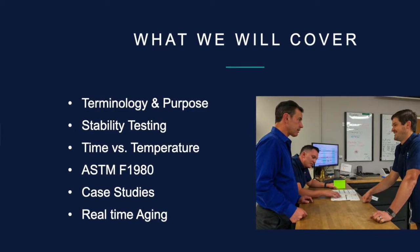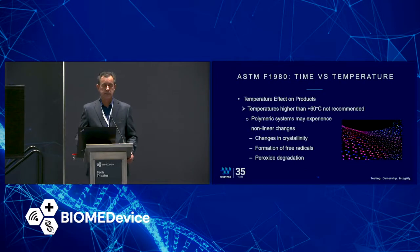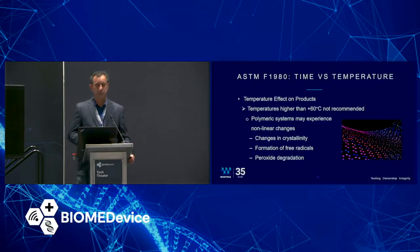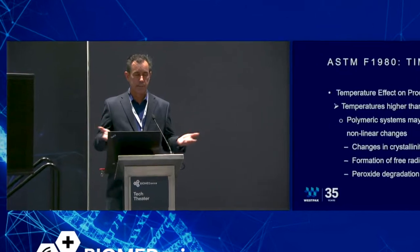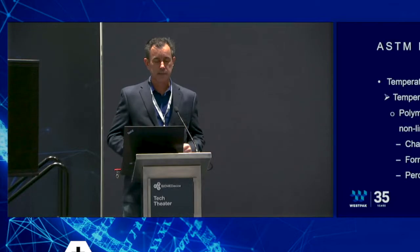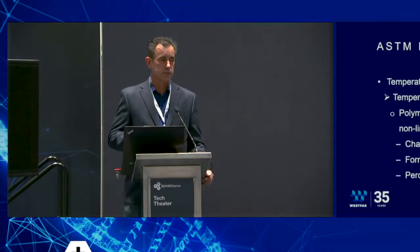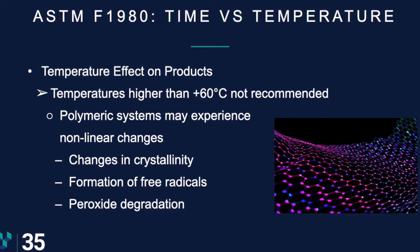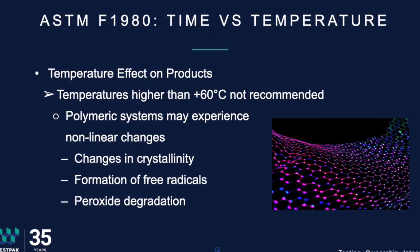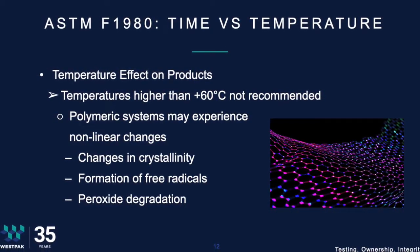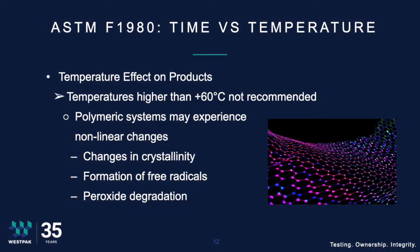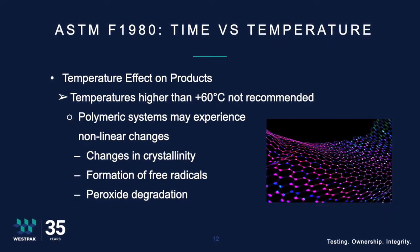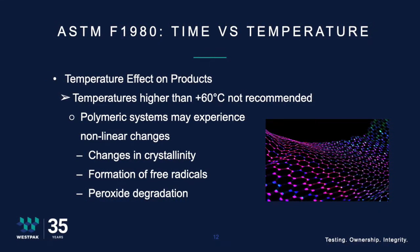Let's dig into ASTM F1980, talking about time versus temperature. For accelerated aging, the whole premise is that we're going to increase the temperature to shorten the duration of time that we're going to age these products. In the standard itself, it talks about temperatures higher than 60°C are not recommended, due to polymeric systems that may experience nonlinear changes, changes in crystallinity, formation of free radicals, or even peroxide degradation.